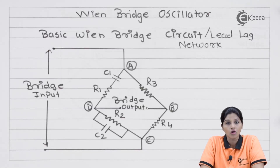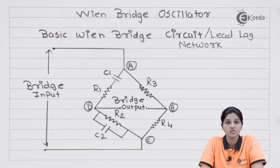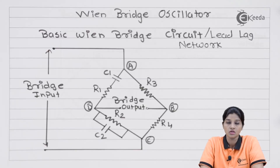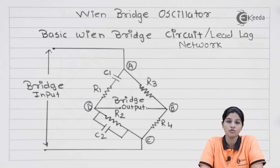Oscillators are further classified into two types based on the components used for implementation: RC oscillators and LC oscillators. In the case of RC oscillators, the components used are resistors and capacitors. RC oscillators are basically used for low frequencies and are therefore also called audio oscillators.